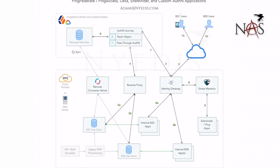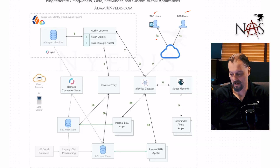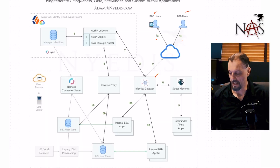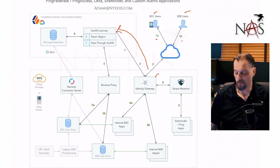In this diagram we have B2C users and B2B users. No matter what type of users you have, you can delineate the login flow using cloud or on-prem. B2C users get the alpha realm, B2B users get the beta realm. When a user goes to log in, the first thing DNS resolves to is an Identity Gateway. That Identity Gateway manages the session and validates that the user has logged in, then kicks off the authentication journey in ForgeRock Identity Cloud.